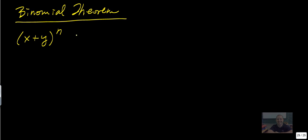So the binomial theorem, it looks like this. If you have anything, x plus y, let's say, to the power of n, how you work out that expansion is this.